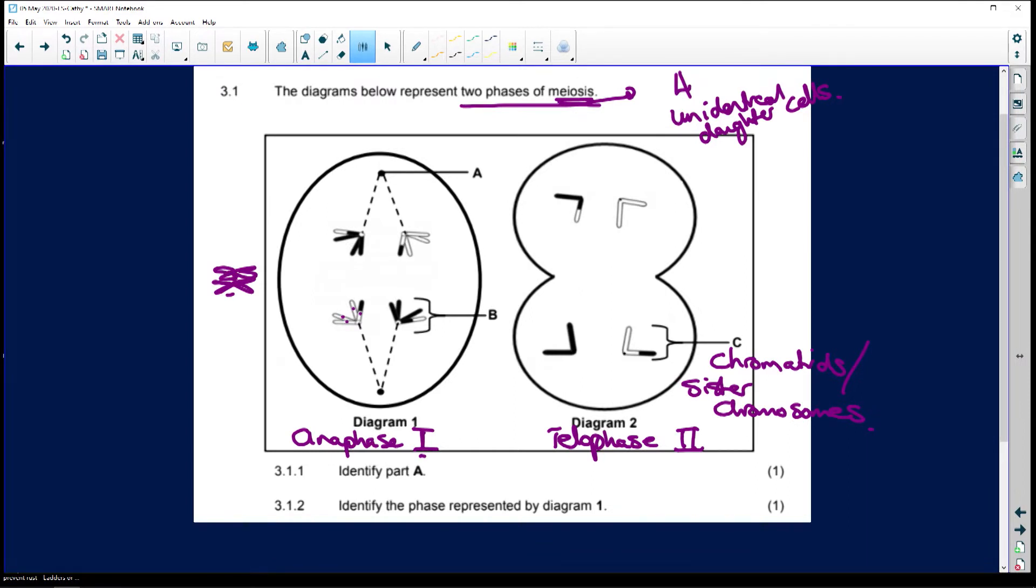So whenever you see a diagram, the first thing you do is your labels. So A would be your centriole. And there's a centriole here as well. The two centrioles come from a centrosome. And what do you have in the middle of a chromosome that holds the two chromatids together? That is a centromere. Don't confuse a centriole and a centromere. The centriole is at the poles. Centromere merely holds the two chromatids together.